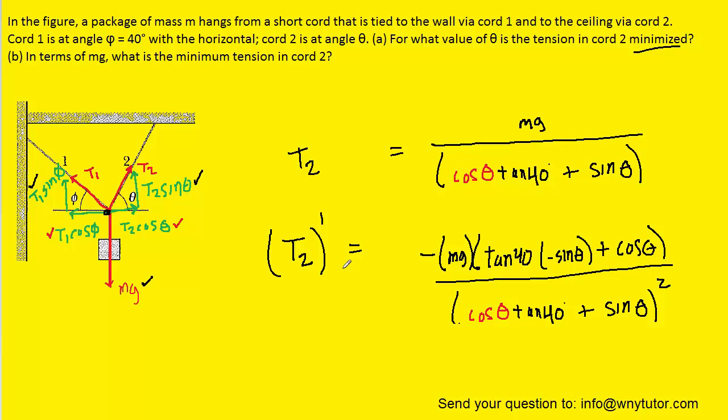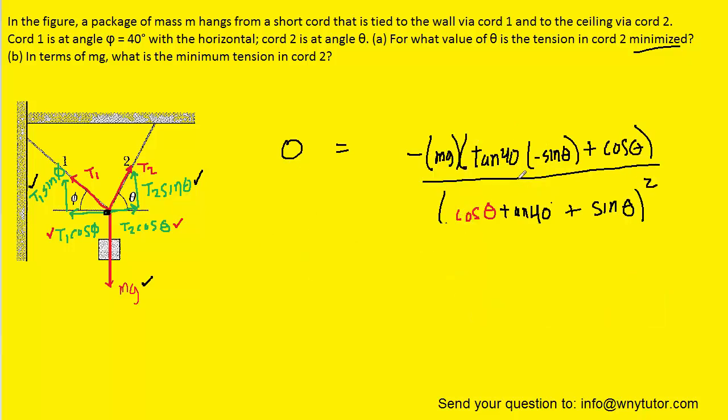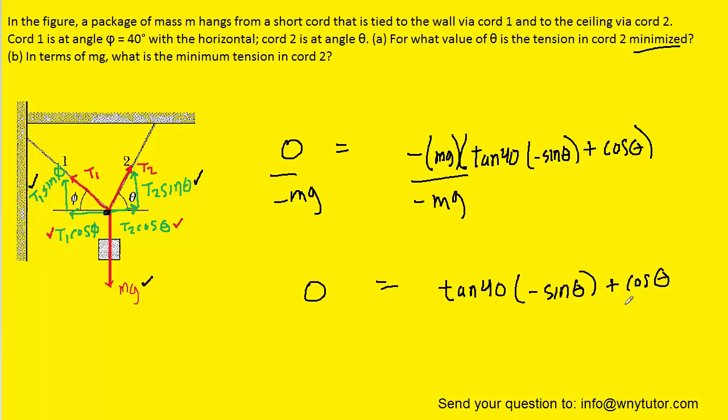After finding the derivative we set that derivative equal to zero. So let's substitute zero in for T2 prime. The only way the right hand side could equal zero is if the numerator equaled zero, so we can remove the denominator. We can divide out the negative mg. Perhaps next we could subtract cos theta over to the other side. We could divide both sides by negative one so that these negatives cancel.